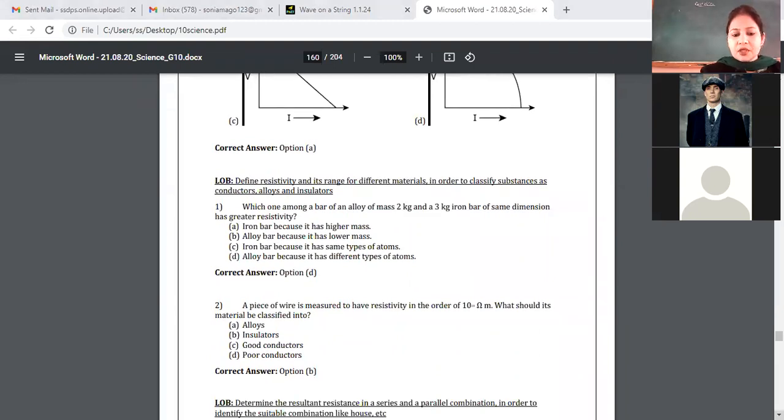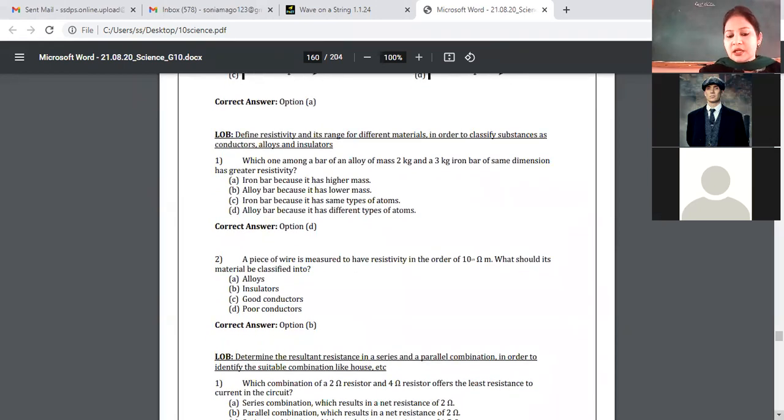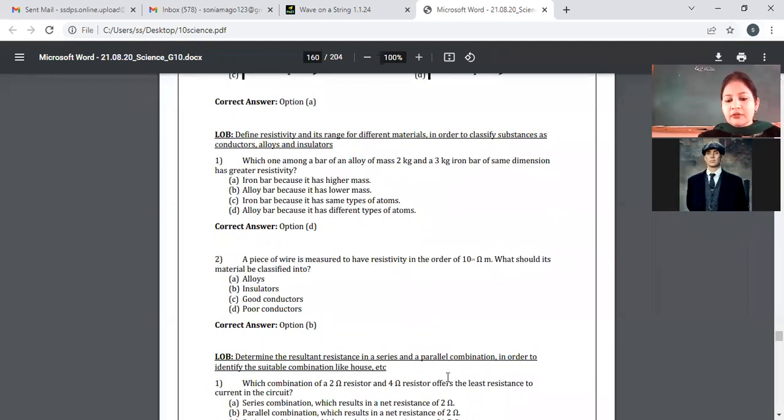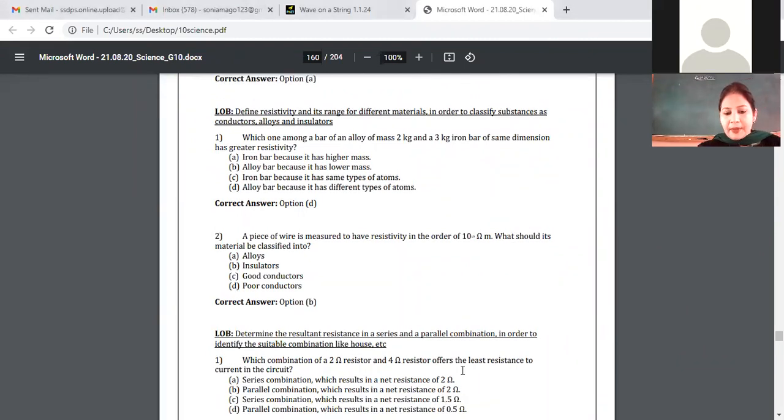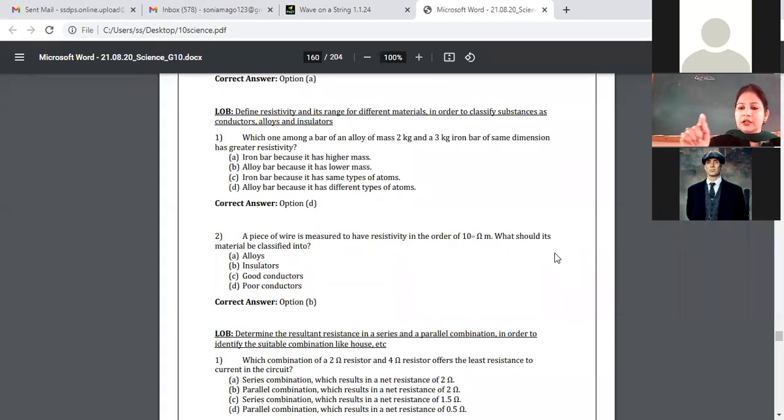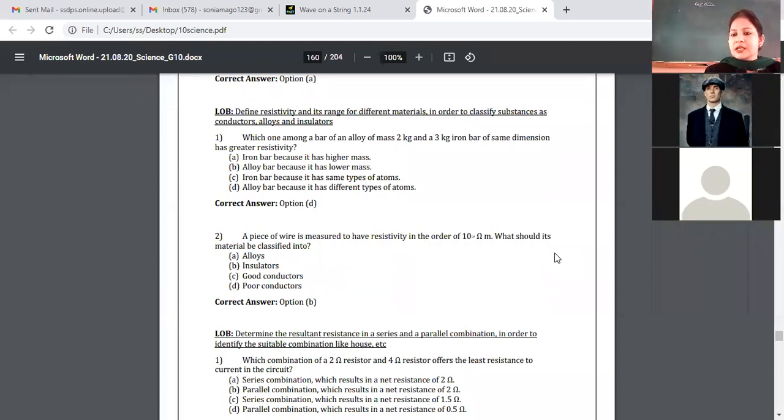Which combination of a 2 ohm resistor and 4 ohm resistor offers least resistance to current in a circuit? Yes, Sanyia? Parallel combination of two resistors. So which one would be correct? 0.5 ohm. Yes, Sanyia, parallel me nikaal lo. 2 into 4 over 2 plus 4, that's 2 into 4 over 6. So this is 4 by 3. Parallel combination offers the least resistance. For least resistance, we will connect them in parallel. This is for sure.